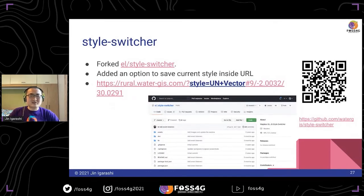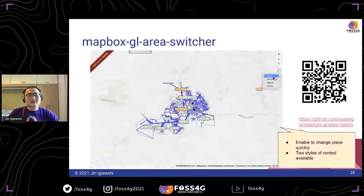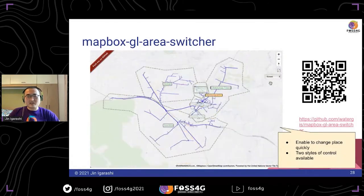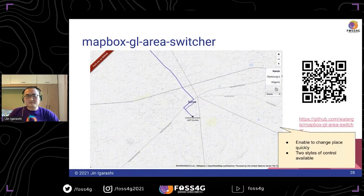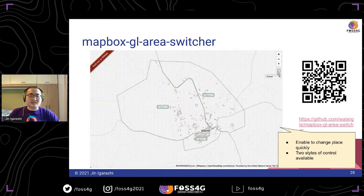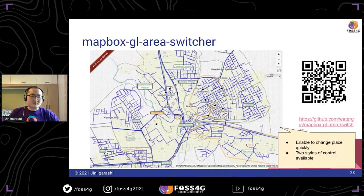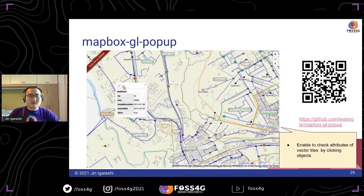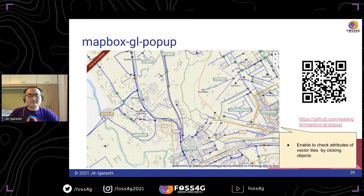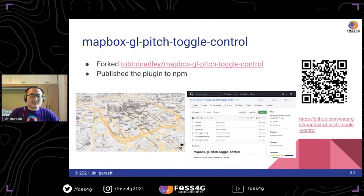This style feature hooks the original plugin and adds a new feature to save the current style inside the URL, so water utilities staff can share the URL with its coordinates and selected style. The area switcher plugin easily switches the place quickly — very useful if water utilities manage systems in different places. And the popup plugin can display the attributes of each feature.